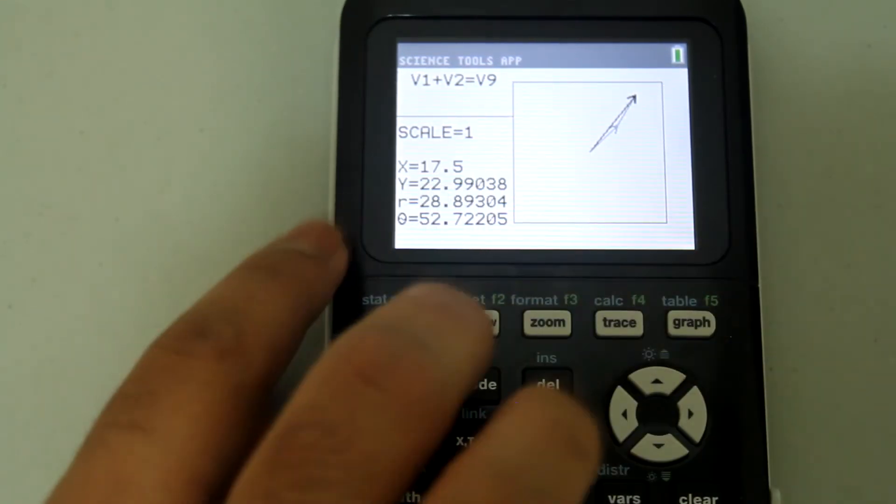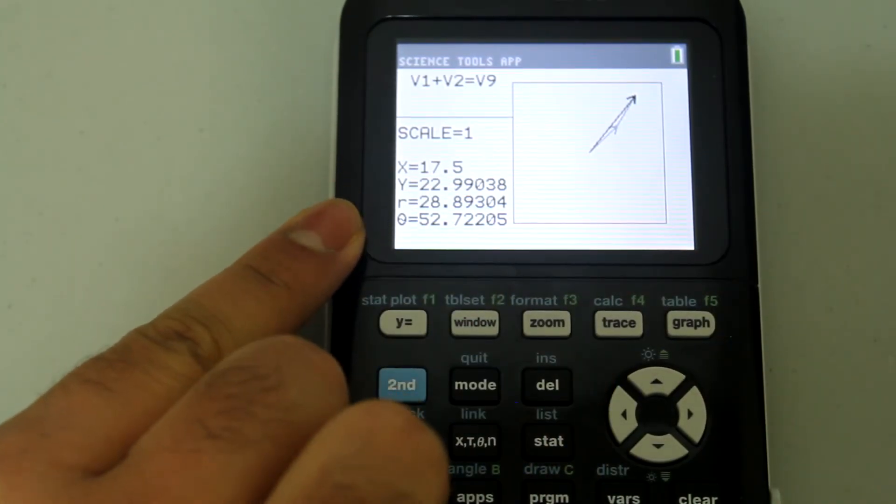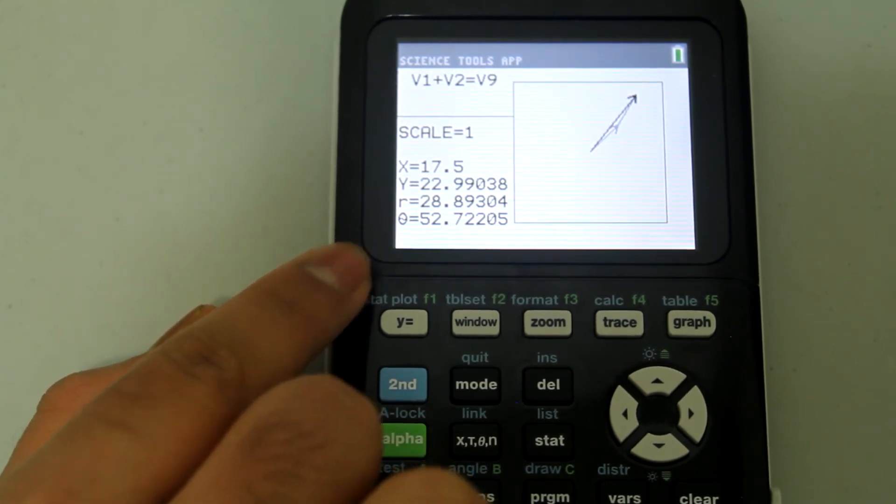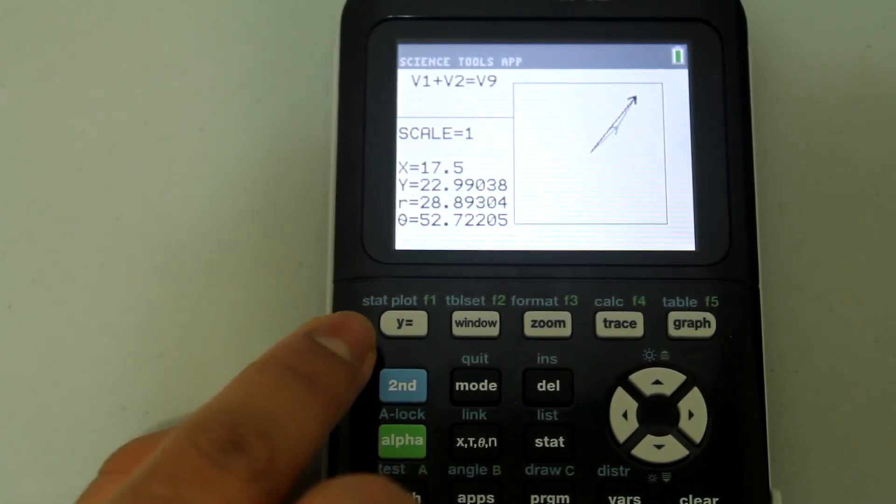If we go pick we see that the resultant is drawn out. We are given the new X components, Y components, the resultant and the angle with respect to the X axis. Similarly you would do subtraction using the same method.